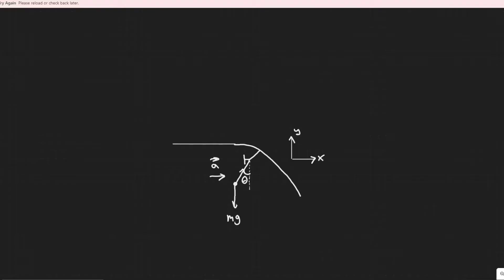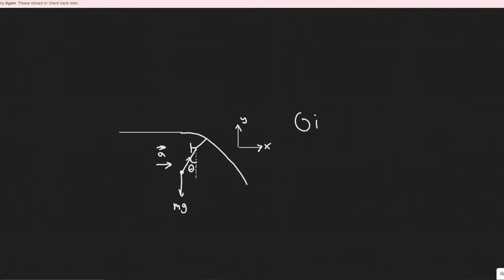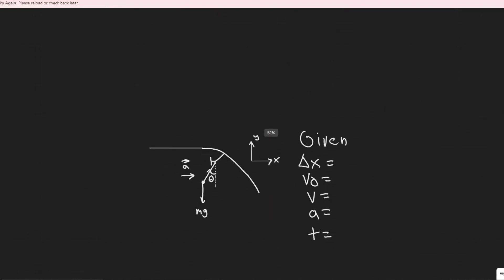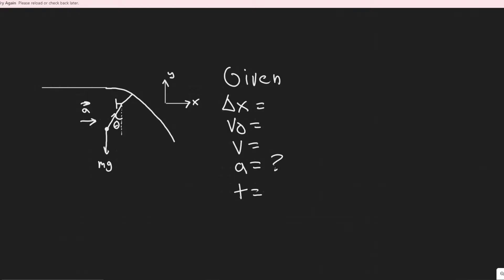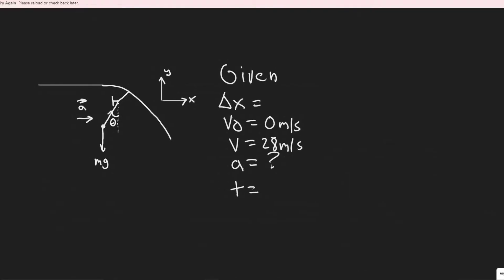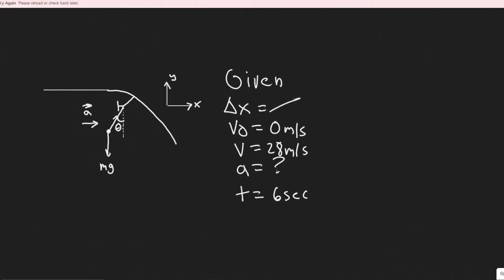We're going to solve for the acceleration using kinematics. I always like to write out my main variables: delta x (displacement), initial velocity, final velocity, acceleration, and time. I know I'm solving for acceleration. From the problem, we're accelerating from rest to 28 meters per second, so initial velocity is zero, final velocity is 28 m/s, and time is six seconds. We don't need the distance — we already have three variables, which is enough to solve kinematics.